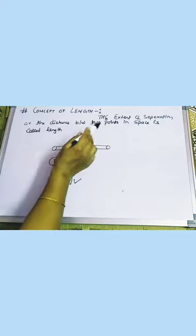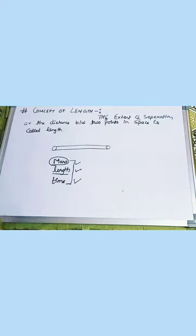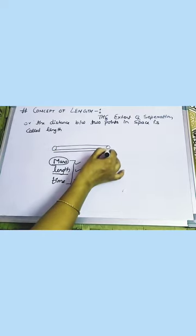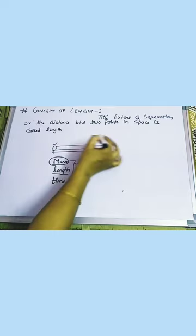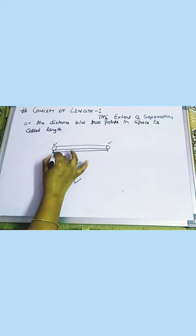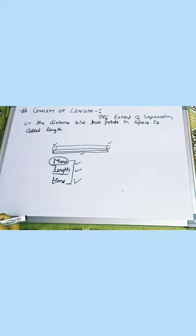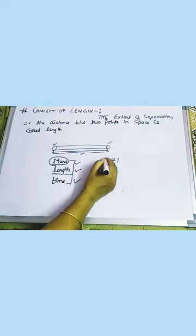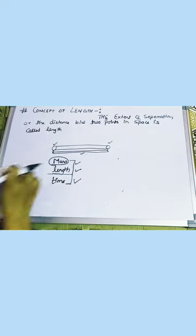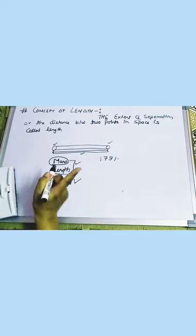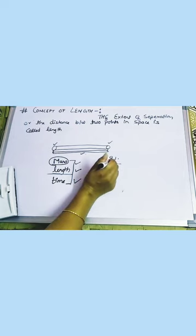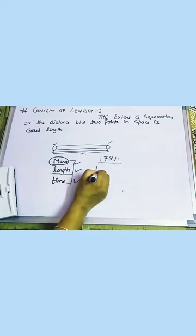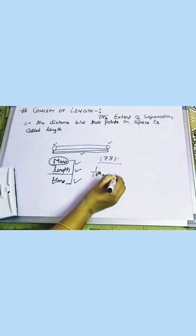The extent of separation or distance between two points in space is called length. When we measure the distance between two points of a rod, that gives the length of that particular object. In 1791, the French Academy of Science defined 1 meter as equal to one ten-millionth of the distance from the north pole to the south pole along the equator.